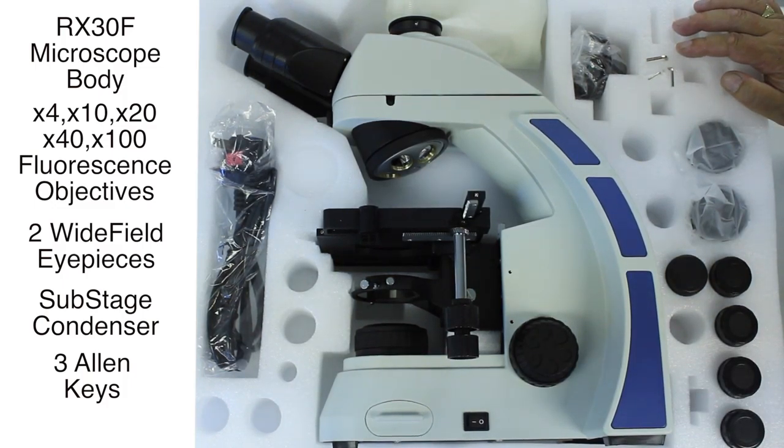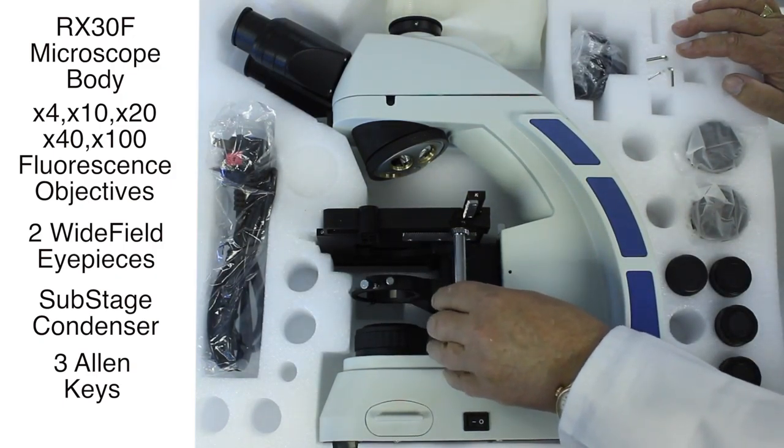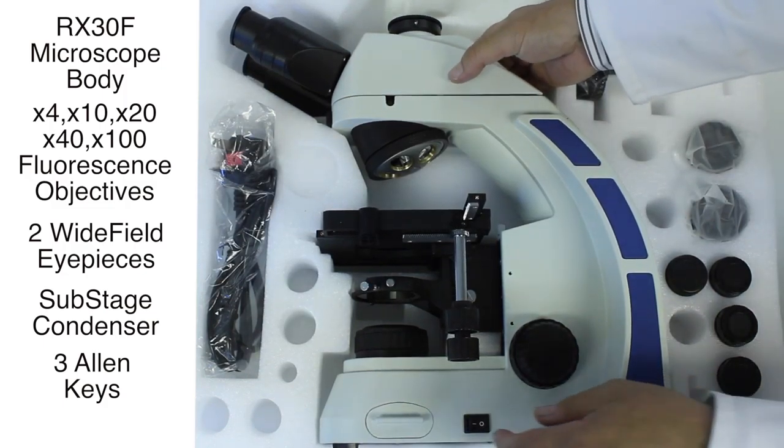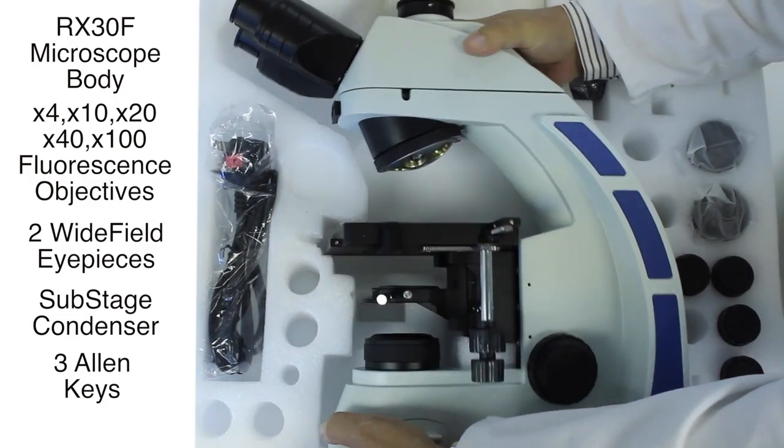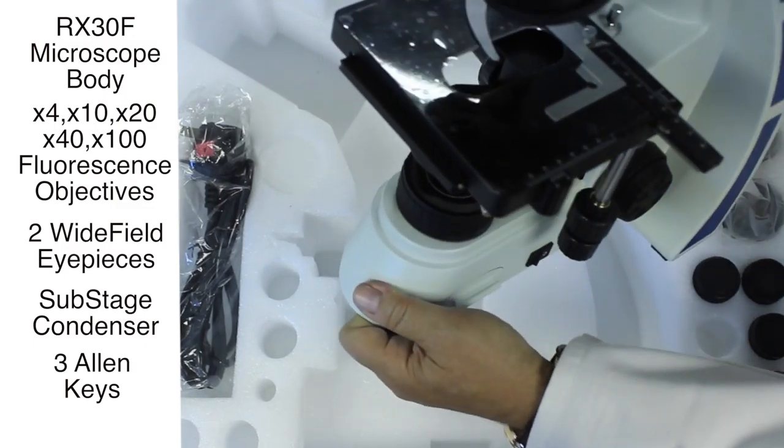To remove the microscope from the polystyrene shape, don't be tempted to grab it by the handle of the stage because it's possible you may bend it. Put one hand under the head and the other under the base and just gently ease it out of the polystyrene.